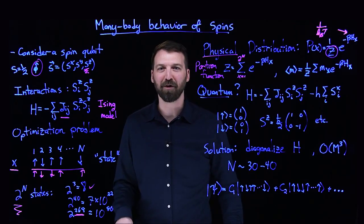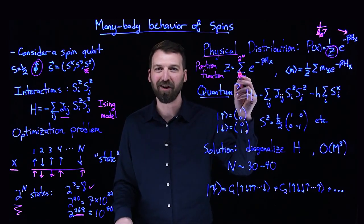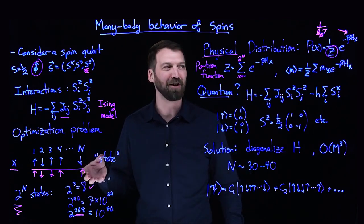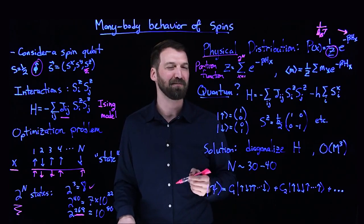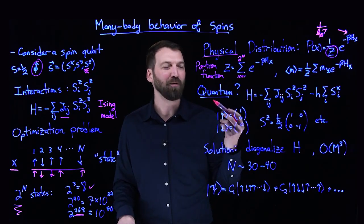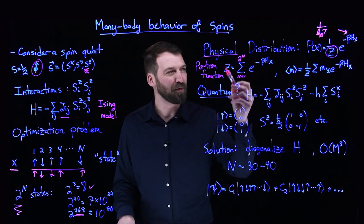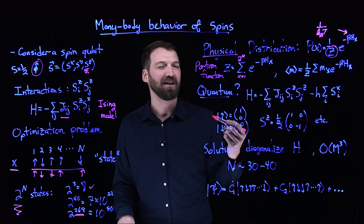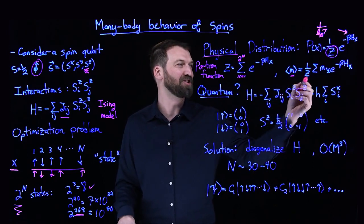It's weighted by the Boltzmann weight. This would run over all configurations x, from 1 to 2^n. That partition function is a fundamentally complex object. In order to calculate it, you essentially have to do these almost infinite sums when n gets very large.